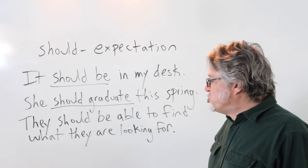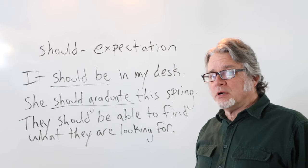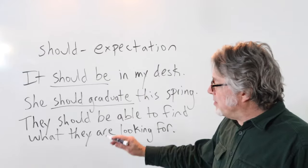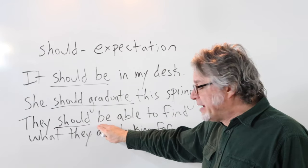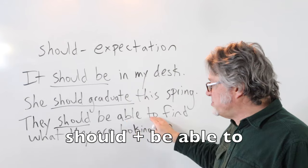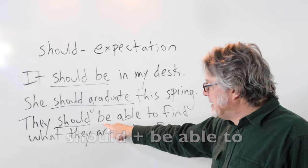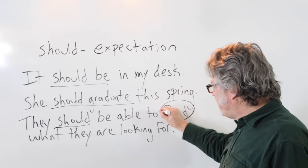They should be able to find what they are looking for. In this example, the modal verb should is used with the phrasal verb be able to. So this is in the simple form. And the main verb is find. This could be in a store or it could be on the internet.